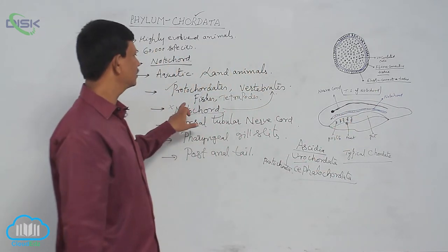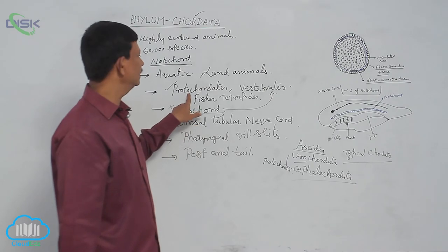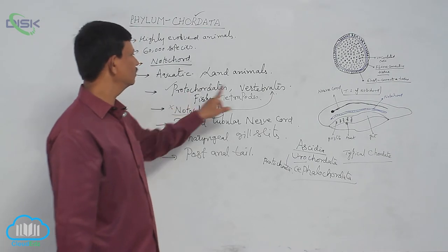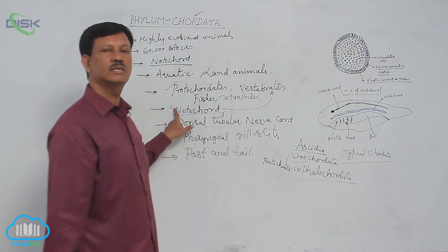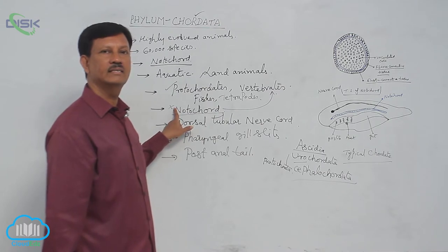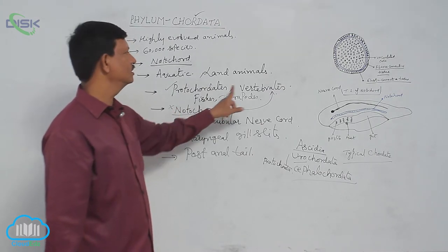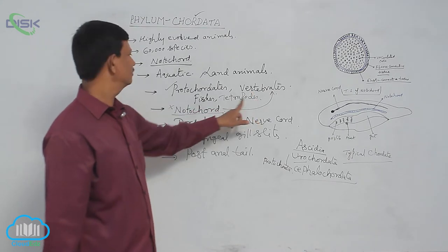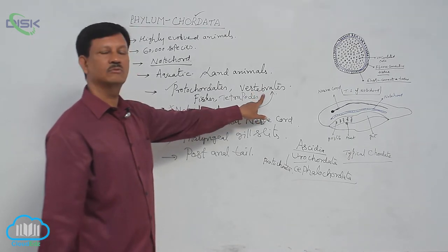Notochord is present throughout their life in protochordates. But in vertebrates, notochord is present only in the embryonic condition. In the adult condition, it is replaced into the vertebral column. That is why fishes and tetrapods are known as vertebrates.